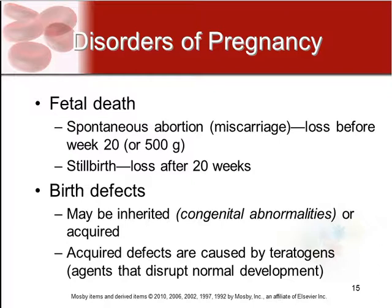Birth defects are another problem that can occur. These can either be inherited, which means they're genetic, or they can be acquired at some point during the pregnancy. Acquired defects are often caused by teratogens, which are agents that disrupt the normal development of the fetus.